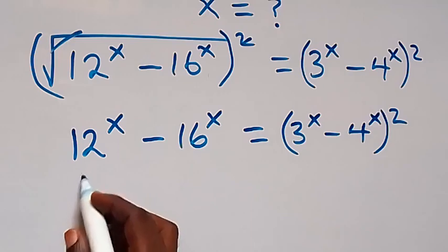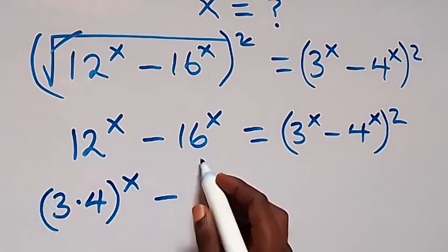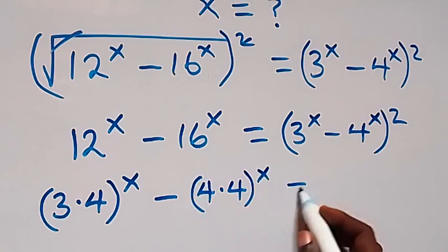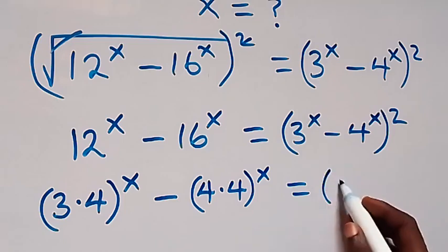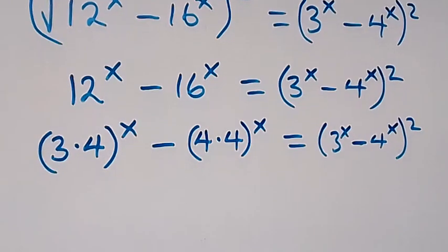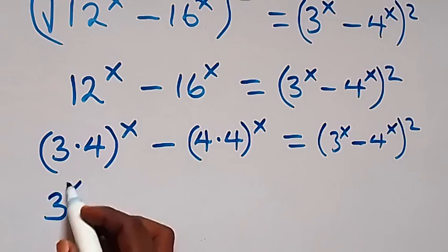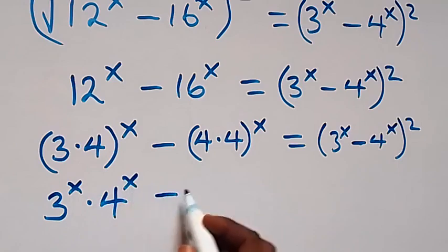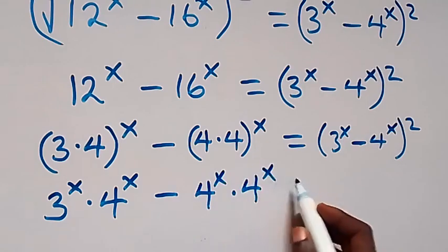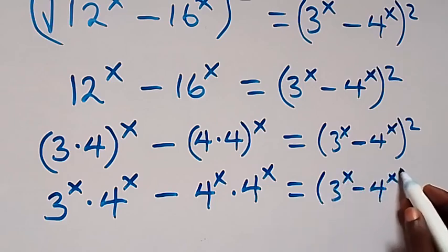Then here we can write 12 as 3 raised to power x times 4 raised to power x, then minus — 16 can be written as 4 raised to power x times 4 raised to power x. This power will affect these numbers here, so we have 3 raised to power x times 4 raised to power x, then minus 4 raised to power x times 4 raised to power x, then equals to 3 raised to power x minus 4 raised to power x, then squared.